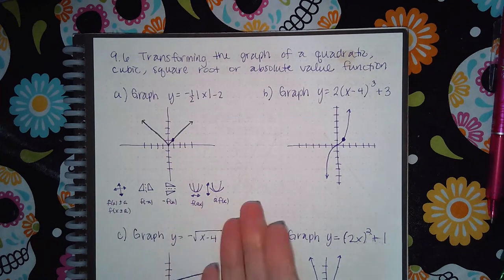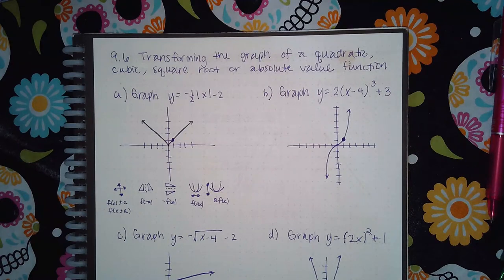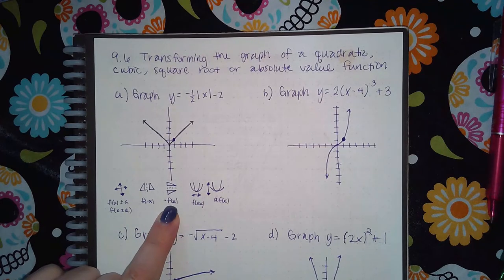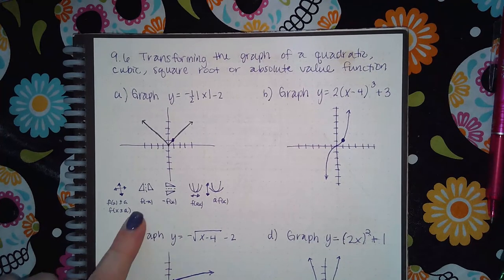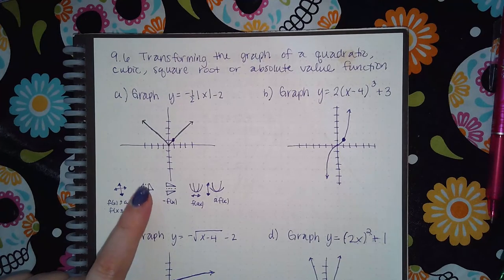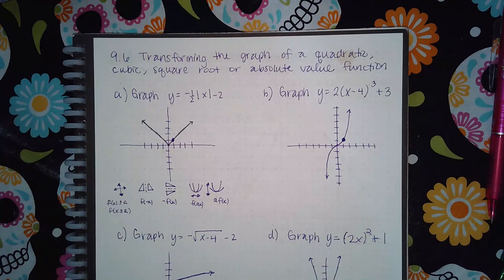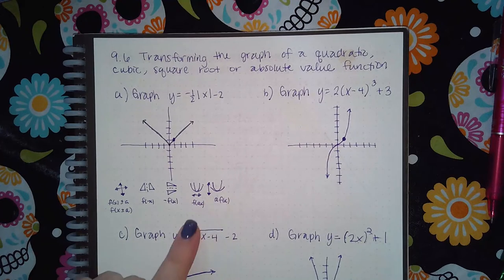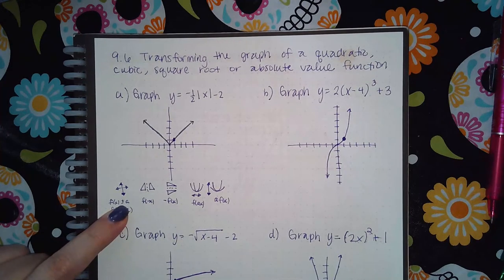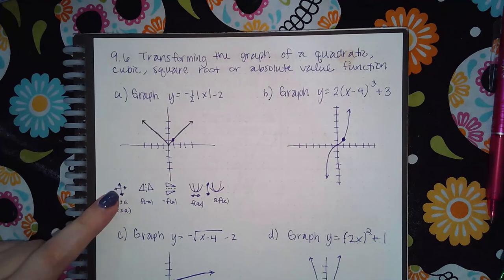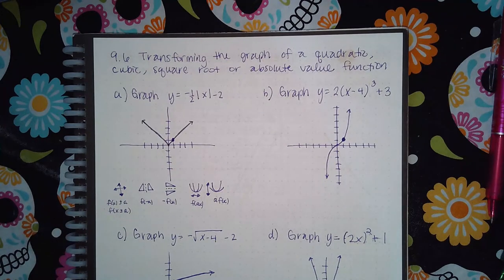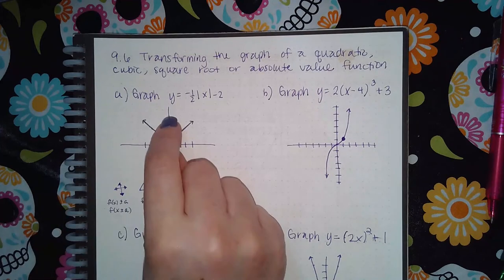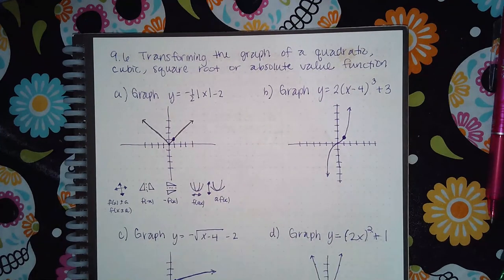I need to decide what's going to happen to the graph before I figure out which buttons to use. If you have a negative outside your basic function, click this button. If you have a negative on the inside, click this button — it does the reflection automatically. If you have a coefficient on the outside, select this button; coefficient on the inside, select this button. For plus or minus on the outside or inside, click this button, then drag the graph and let go.